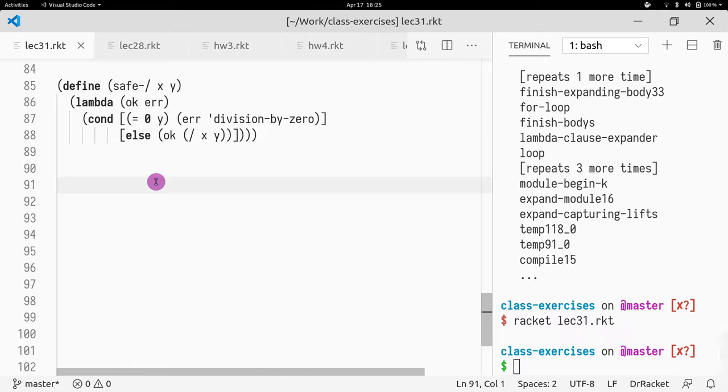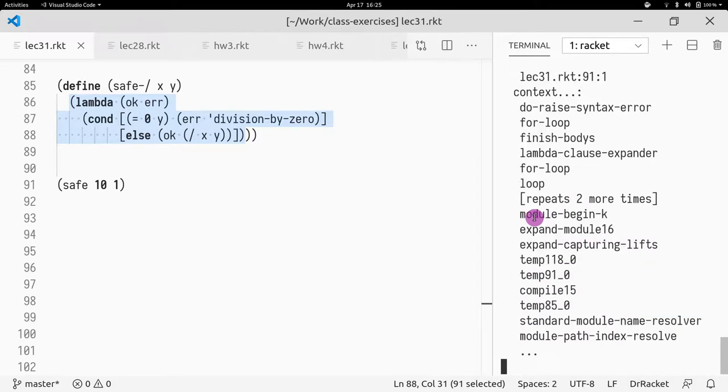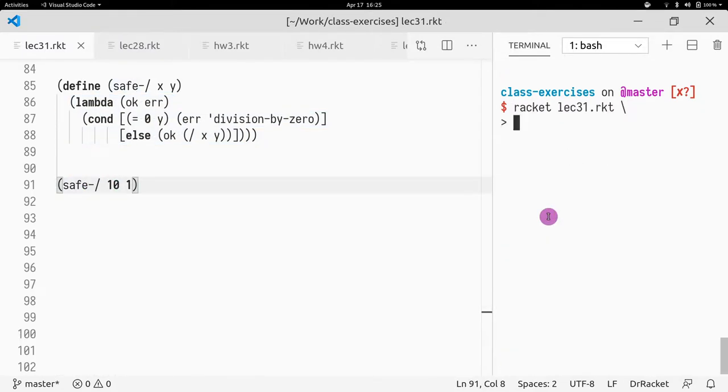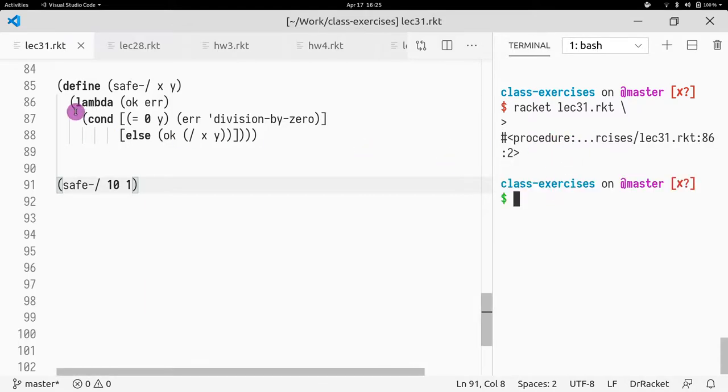Let me write safe division. If I do safe 10 divided by 1, let's see what happens. Well, it returns another function. So if I run it, I just get this inner lambda. So what is the lambda? The inner lambda is just specifying which function I should call to communicate my return value. So let me pass display. And if I display on the left and display on the right, it's just going to print it out.